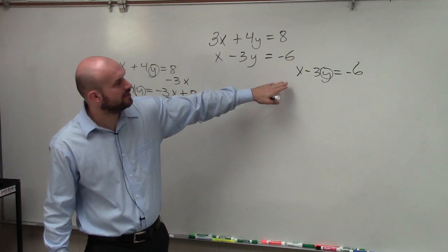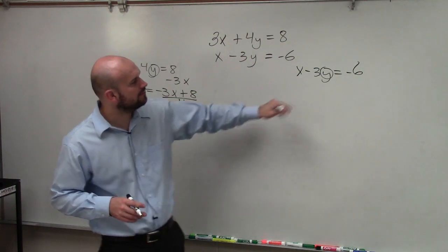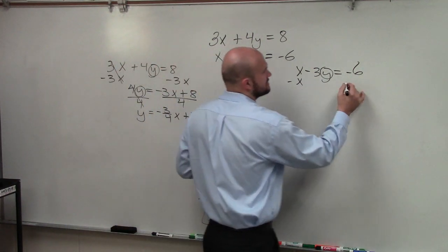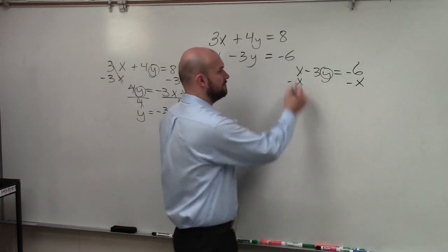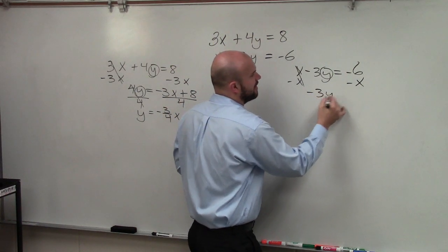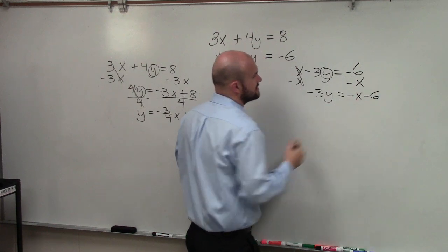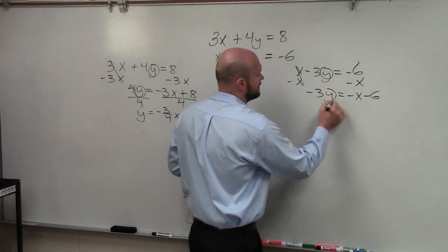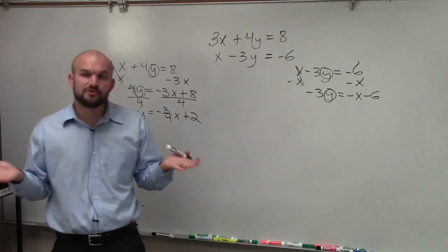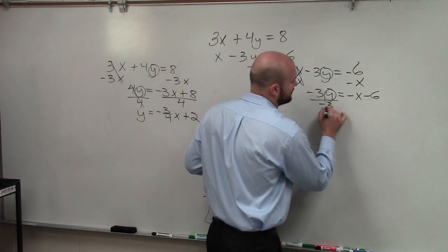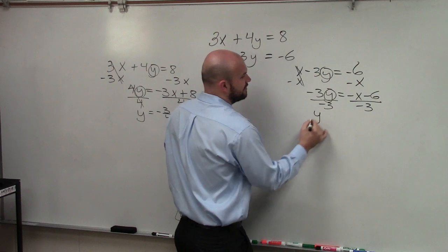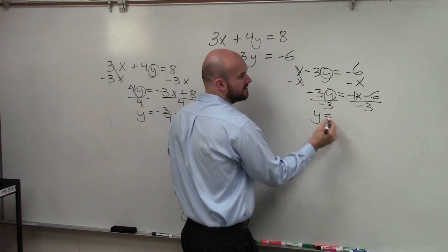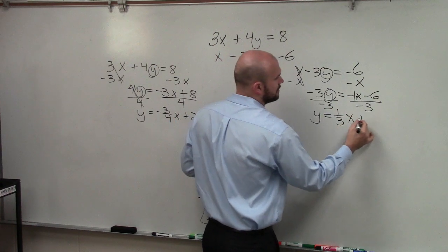Over here, you can see that my y variable is being multiplied by negative 3, and it's being added by x. So I'm going to subtract an x on both sides, and I'll be left with negative 3y equals negative x minus 6. Now my variable is being multiplied by negative 3, so to undo multiplication by negative 3, I divide by negative 3. Therefore, my final equation is y equals — remember, this is like a negative 1 there — so negative 1 divided by negative 3 is a positive one-third x plus 2.